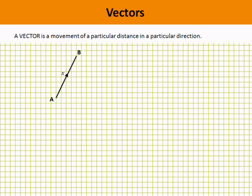This is a presentation about vectors. A vector is a movement of a particular distance in a particular direction, so it has two components: direction and distance or length.